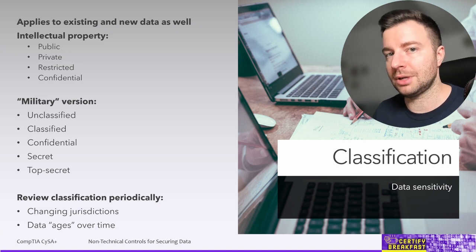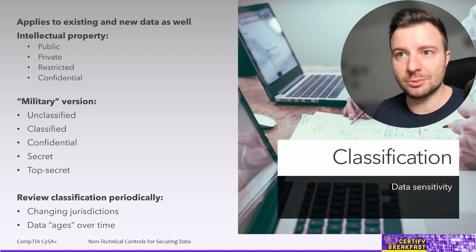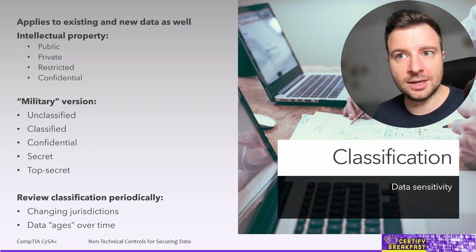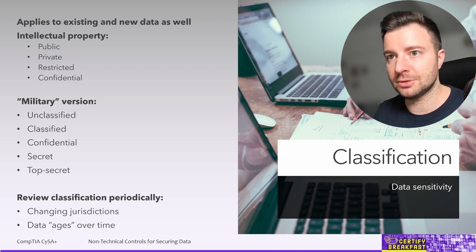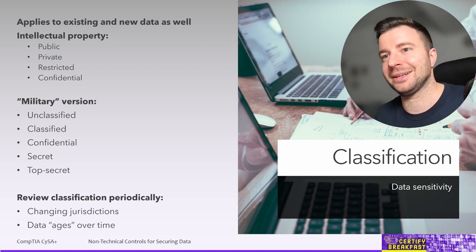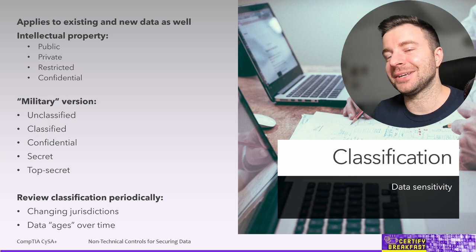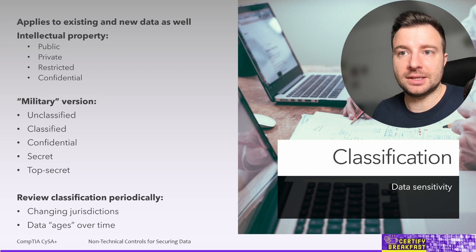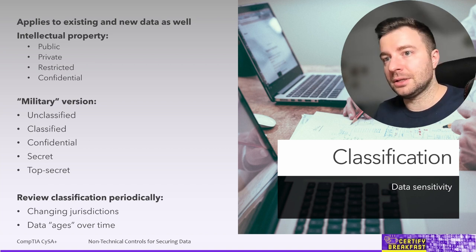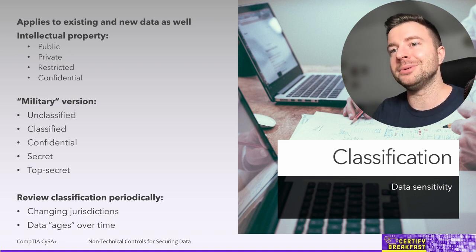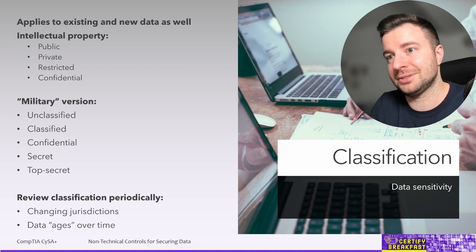Another variant of classification levels is borrowed from the military world: unclassified for data we don't care about, classified for data restricted to private access, confidential for low-security-level secured information, secret for medium security, and top secret for the highest level. This classification must be reviewed periodically for at least two reasons: data may change jurisdictions with different legal requirements, and data will lose its sensitivity over time — for example, a salary list from 30 years ago may no longer be top secret.